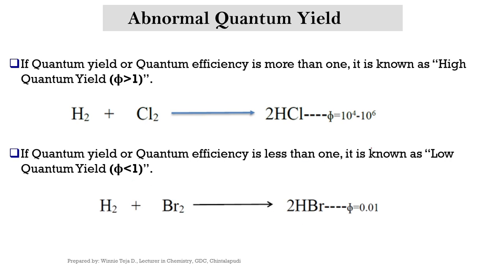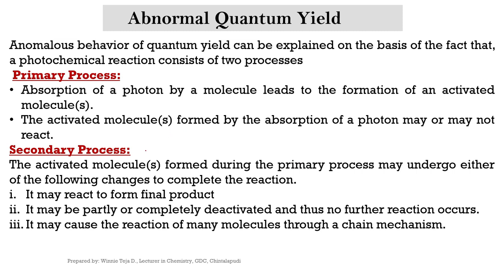If the quantum yield is more than 1, it is known as high quantum yield. If the quantum yield is less than 1, it is known as low quantum yield. This anomalous behavior of quantum yield can be explained on the basis of the fact that a photochemical reaction consists of two processes: the primary process and the secondary process.